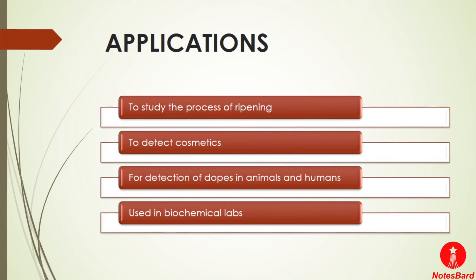The advantages of paper chromatography include that it is the simplest and most rapid method, requires very little material, is not expensive, and has excellent resolving power. However, there are limitations: it cannot be performed with large quantities of sample and is less accurate compared to other methods like TLC, HPLC, and others. This concludes our discussion on paper chromatography, its procedure, and its applications.